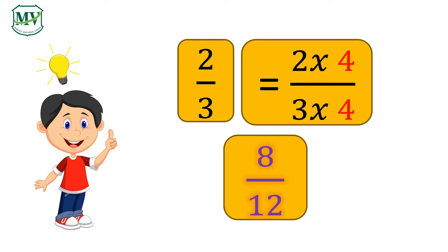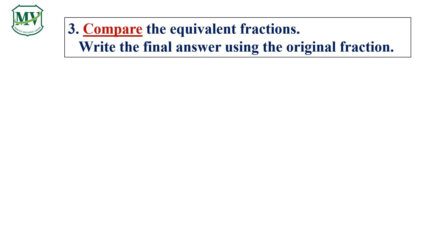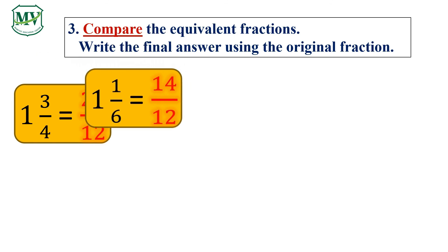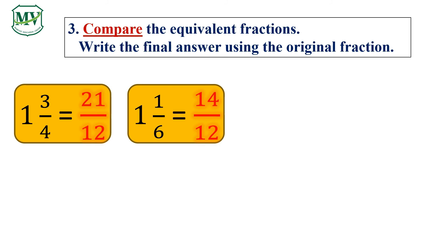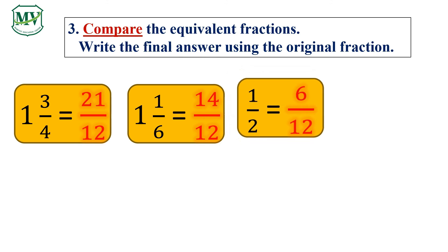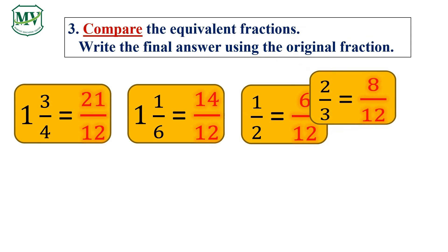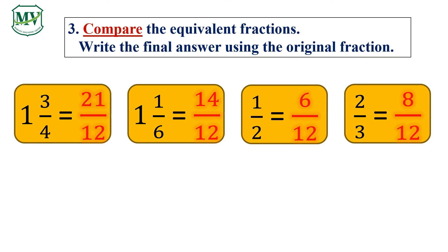Did you get it? Okay, we're almost there. Let's see the last step: compare the equivalent fractions and write the final answer using the original fractions. 1 and 3 quarters equals 21 twelfths. 1 and 1 sixth equals 14 twelfths. 1 half equals 6 twelfths. And 2 thirds equals 8 twelfths.